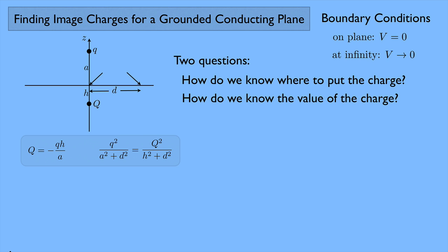Here are the two equations to solve. Cross-multiplying, we get q² times (h² + d²) equals Q² times (a² + d²). And from the origin condition, Q equals negative q·h over a. Plugging that in, we get little q² times (h² + d²) equals little q² h² over a² times (a² + d²). The q² cancels from each side.